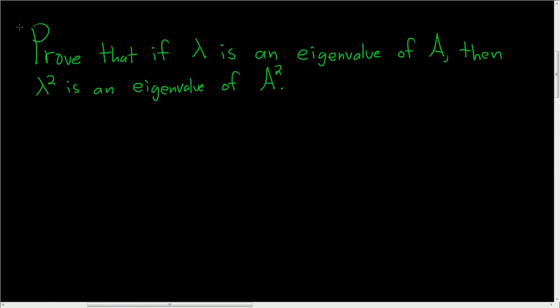Prove that if lambda is an eigenvalue of A, then lambda squared is an eigenvalue of A squared. Proof.